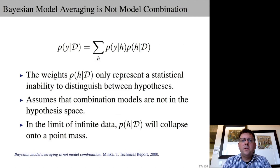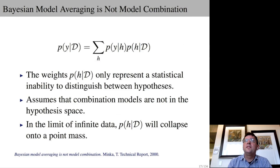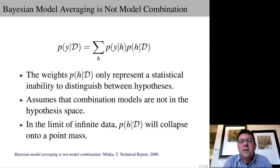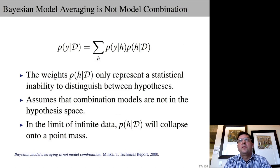There are fundamental differences between Bayesian model averaging and some types of model combination. The Bayesian model average is meant to represent a statistical inability to distinguish between hypotheses given limited information, with the assumption that one setting of parameters is the correct one. As we get more and more data, our posterior over hypotheses or parameters will collapse onto a particular setting and cover the maximum likelihood solution. This is different from some approaches to ensembling and model combination, which work by enriching the hypothesis space and assuming the combination of models might be a correct description of reality.